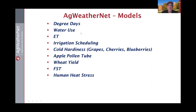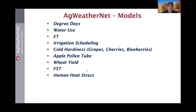Models include degree days with customizable thresholds, water use or ET calculations, irrigation scheduling tools, cold hardiness models for grapes, cherries, and blueberries, an apple pollen tube model for scheduling bloom thinnings, a spring wheat yield model estimating profitability per acre, fruit surface temperature for apples to help prevent sunburn hazard, and human heat stress models in collaboration with the University of Washington.